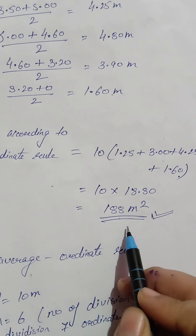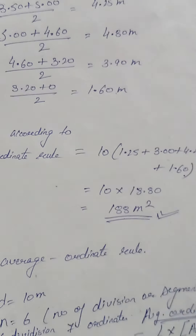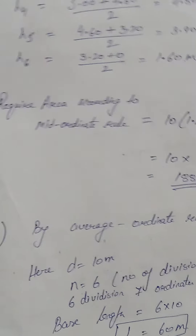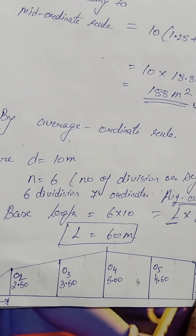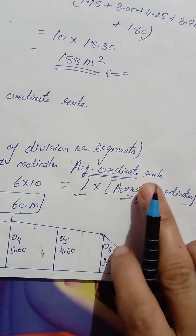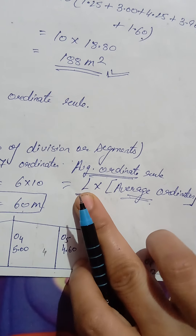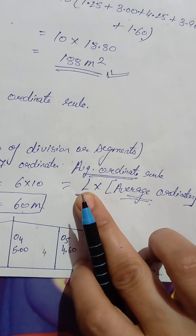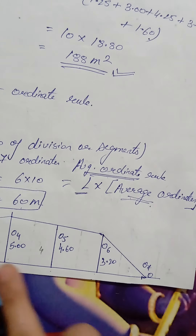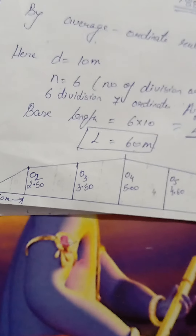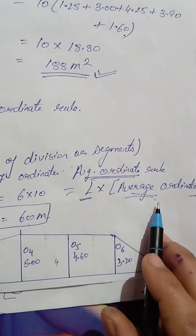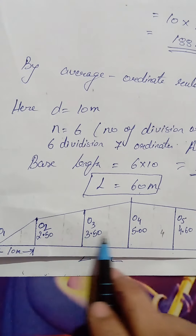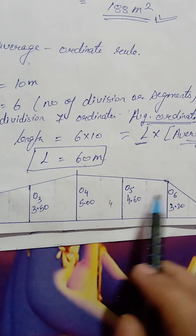To find the mid ordinate: sum two adjacent ordinates and divide by 2. For example, 0.0 plus 2.5 divided by 2 gives h1. Similarly, the next pair gives h2, the next gives h3, and so on for h4, h5, and h6. I have solved these one by one. Now put all values into the formula: required area equals common distance into sum of all mid ordinates.